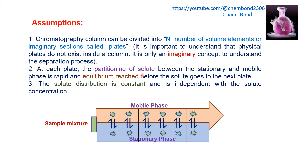At each plate, the partition of the solute between the stationary and mobile phase is rapid, and equilibrium is reached before the solute moves to the next plate. First, equilibrium establishes in the first plate, then it moves to the second plate where equilibrium establishes, then to the third plate and so on. The solute distribution constant is independent of solute concentration.